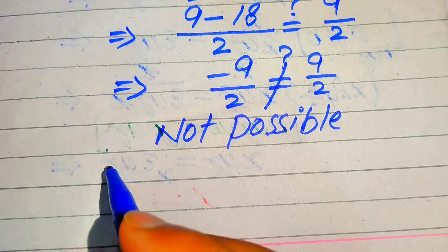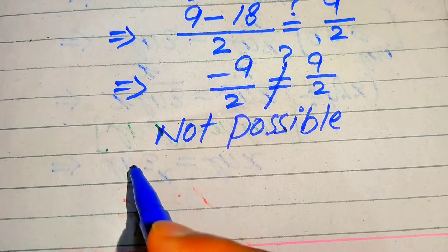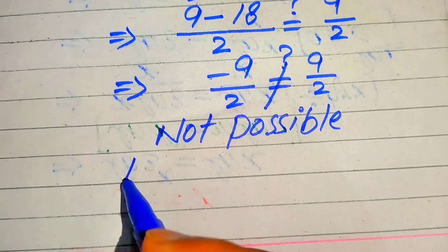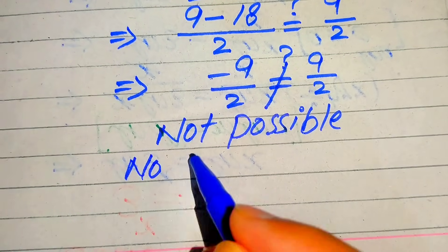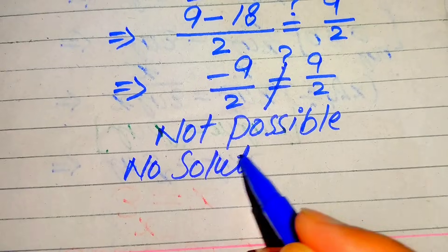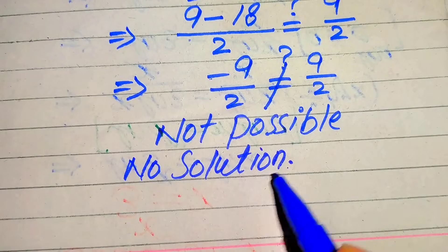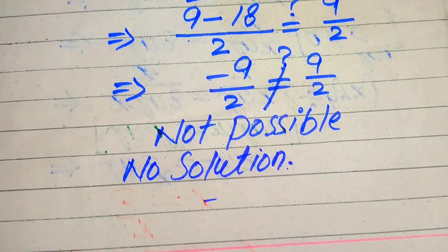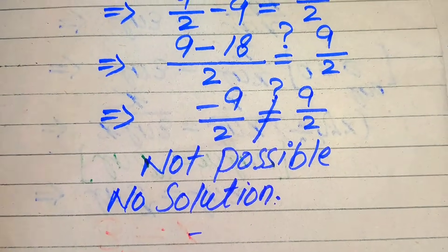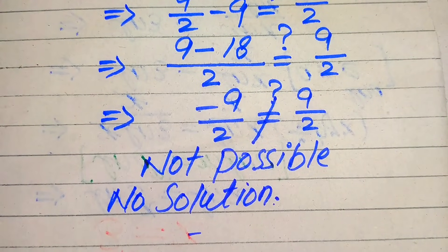So this is not possible — it means the value t equals 9 over 2 does not satisfy our given equation. Finally, we conclude that the given equation has no solution. This is our final answer. Thank you so much for watching this video; please subscribe to my channel for more exciting videos.